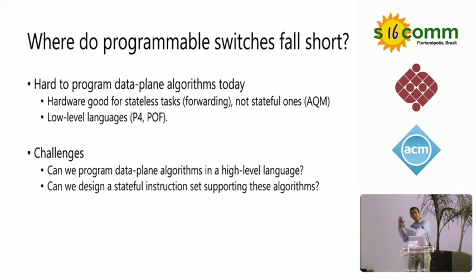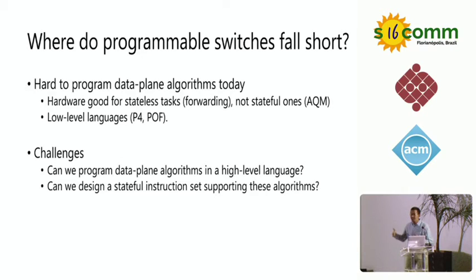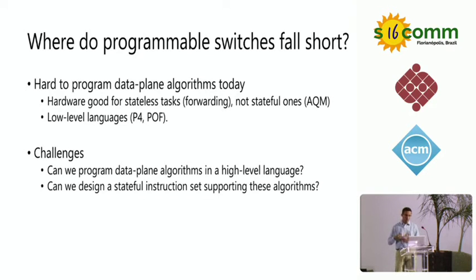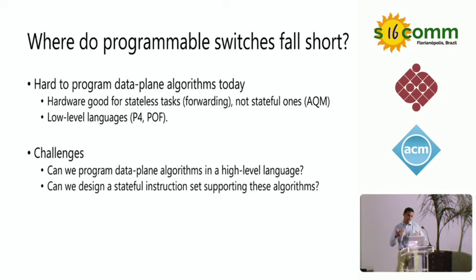The reason is that the hardware for these switches is great for stateless tasks like forwarding that don't manipulate any state in the data plane. By contrast, the algorithms I mentioned — things like active queue management and congestion control — manipulate state in the data plane. For instance, RED maintains a moving average of the queue size in the data plane. The second problem is that the language to program these switches operates at a fairly low level, requiring you to manually specify a sequence of match-action tables for the algorithm to work.